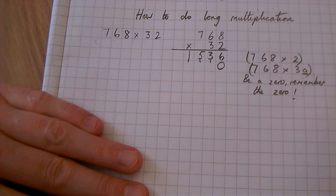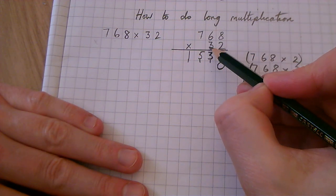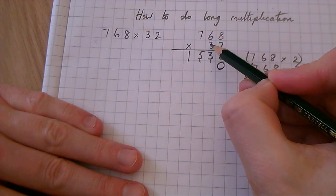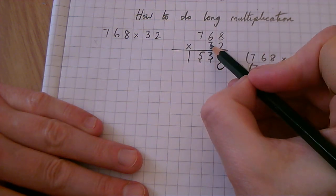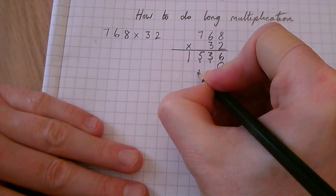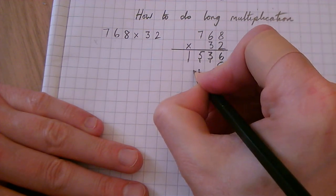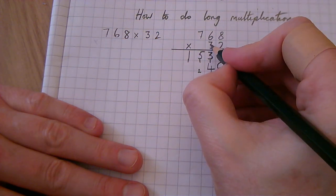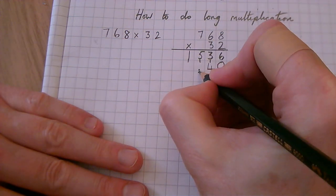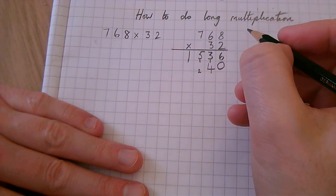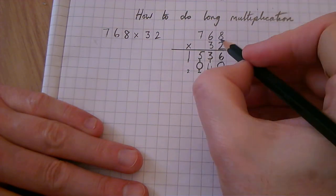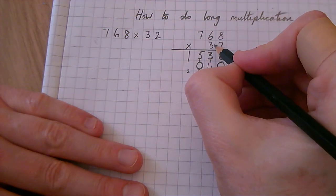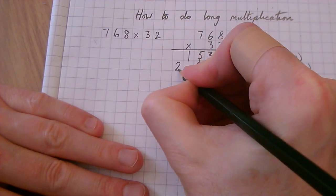Okay, so same method, but we're going to start with the 3, the 3 tens, and we're going to go to the ones. So we're going to do 3 times 8, then 3 times 6, then 3 times 7. 3 times 8 is 24, and I'm going to put that 2 on the line there. Put the 4 there. 3 times 6 is 18. Add the 2 is 20. 3 times 7 is 21. Add the 2 is 23.